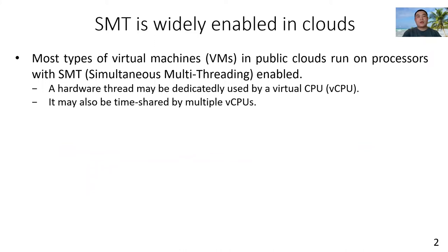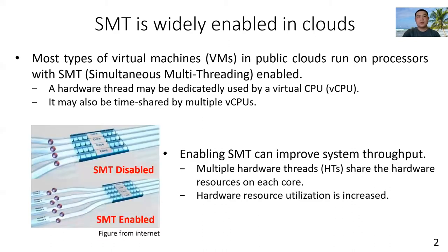In clouds, SMT is widely enabled. Most types of virtual machines in public cloud run processors with SMT enabled, and these VMs can have their VCPUs run on dedicated hardware threads or timeshare hardware threads. Enabling SMT in the cloud is to improve system throughput. The reason is that multiple hardware threads share hardware resources on each core, and thus hardware resource utilization is increased.